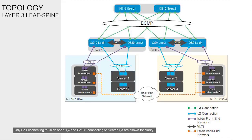In a Layer 3 leaf-spine network, the traffic between leaves and spines is routed. In this example, eBGP is used; OSPF can also be an option. Equal cost multipath routing (ECMP) is used to load balance traffic across the Layer 3 network.